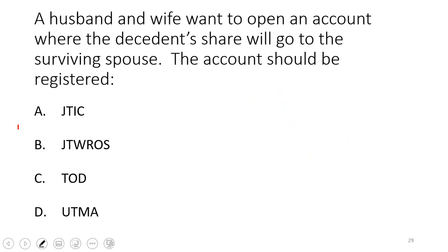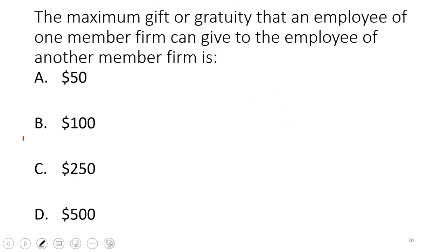A husband and wife want an account where the decedent's share goes to the surviving spouse — that's joint tenants with rights of survivorship. You must contrast this with joint tenants in common on your SIE. It doesn't have to be spouses, but that's how it typically appears on the exam.